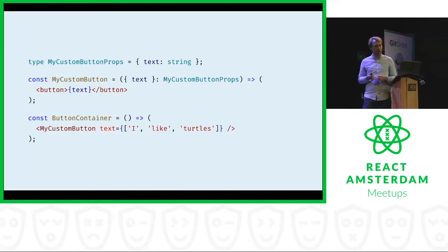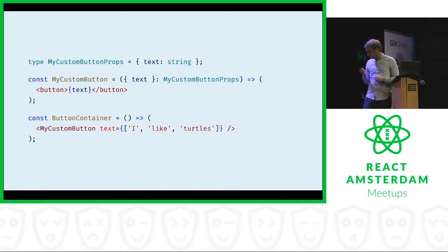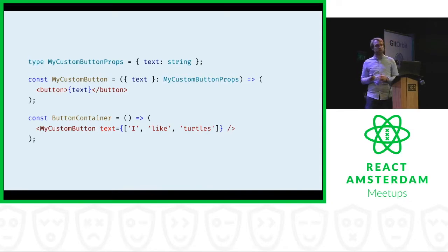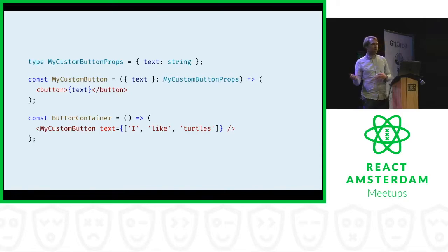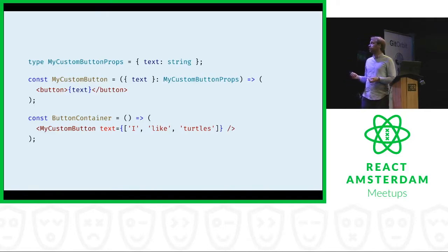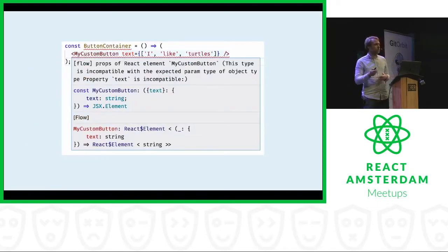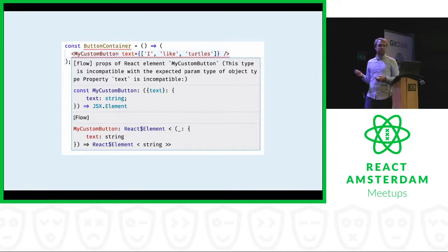Here's a small example of using Flow to make sure there are no bugs in your React components. On top I have a type definition for the props used in a small button component — it has one prop, text, which should always be there and is a JavaScript string. Here's the component; it puts the text inside the button. But someone is using the component and not passing a string but passing an array, which would cause an error. Flow or TypeScript would catch that error and tell you in the development workflow that it's expecting a string but you're passing an array. Go fix it.